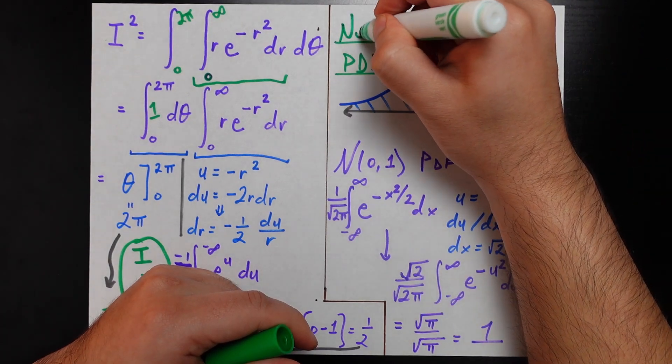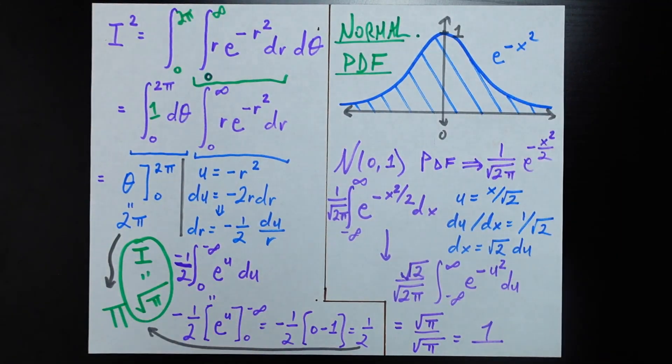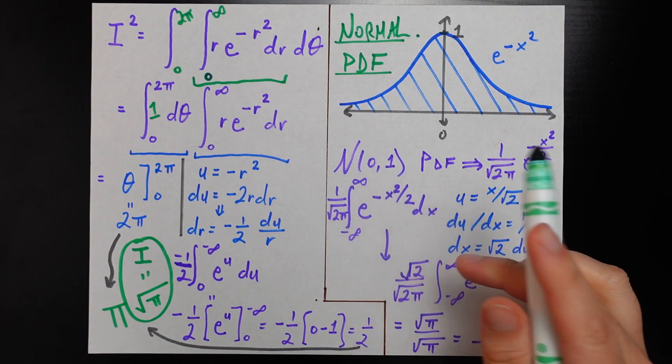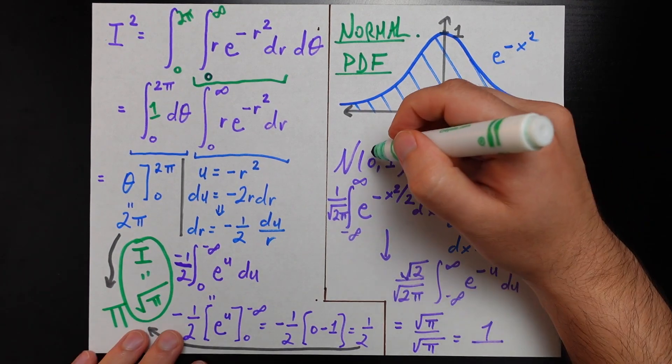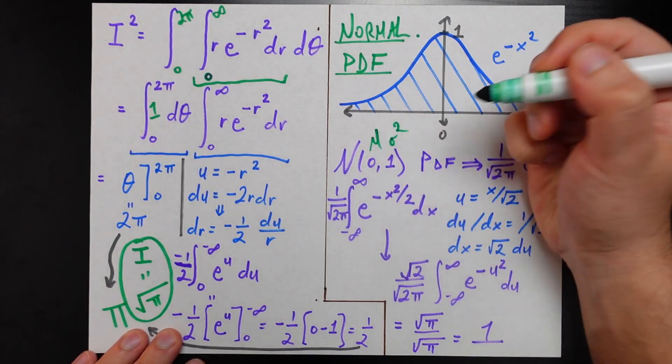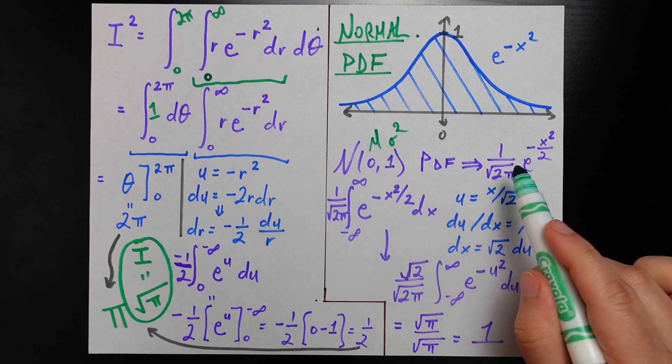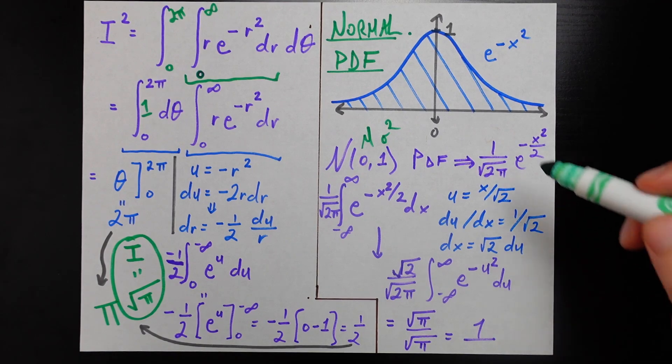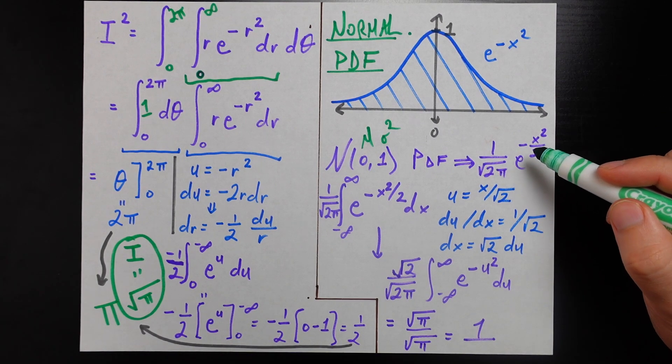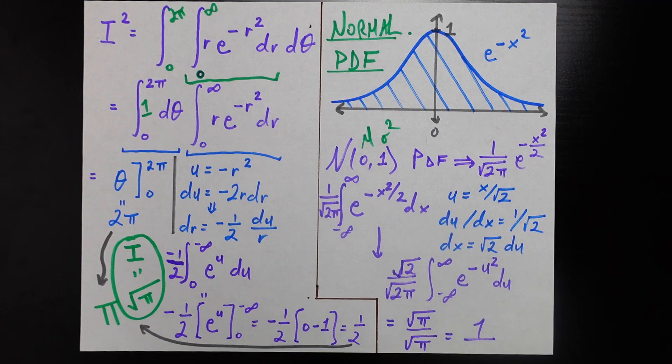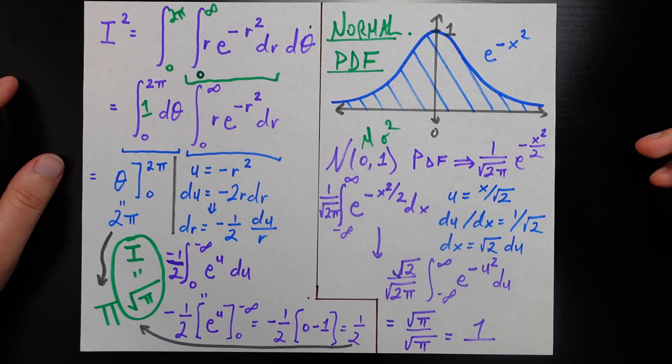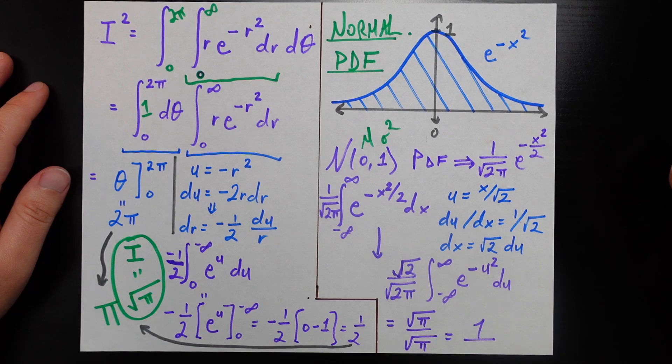In fact, the standard normal distribution with mean zero and standard deviation one has its pdf equal to something remarkably similar to this arbitrary integral we were trying to solve. The PDF there is 1 divided by square root of 2 pi e to the negative x squared divided by 2. Let's say we're trying to prove that the area under the standard normal PDF integrates to one, proving it's a valid PDF.